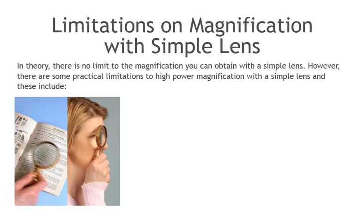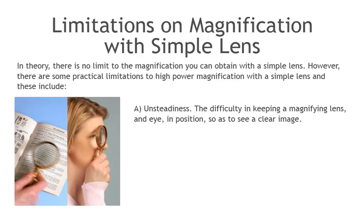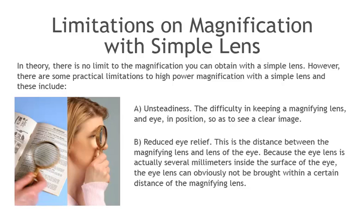In theory, there is no limit to the magnification you can obtain with a simple lens. However, there are some practical limitations to high power magnification with a simple lens, and these include: a) unsteadiness — the difficulty in keeping a magnifying lens and eye in position so as to see a clear image; and b) reduced eye relief. This is the distance between the magnifying lens and the lens of the eye. Because the eye lens is actually several millimeters inside the surface of the eye, the eye lens obviously cannot be brought within a certain distance of the magnifying lens.